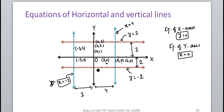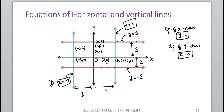If this line is at a distance of 4 units to the right of the y-axis, the equation of this line will be x = 4. So if there is a horizontal or vertical line, it will be easy to write its equation.